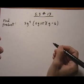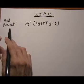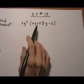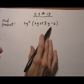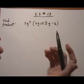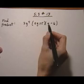5.3, number 13. Here we're asked to find the product of a monomial multiplied by two binomials. So that means multiply them all together and we're going to do it piecemeal.